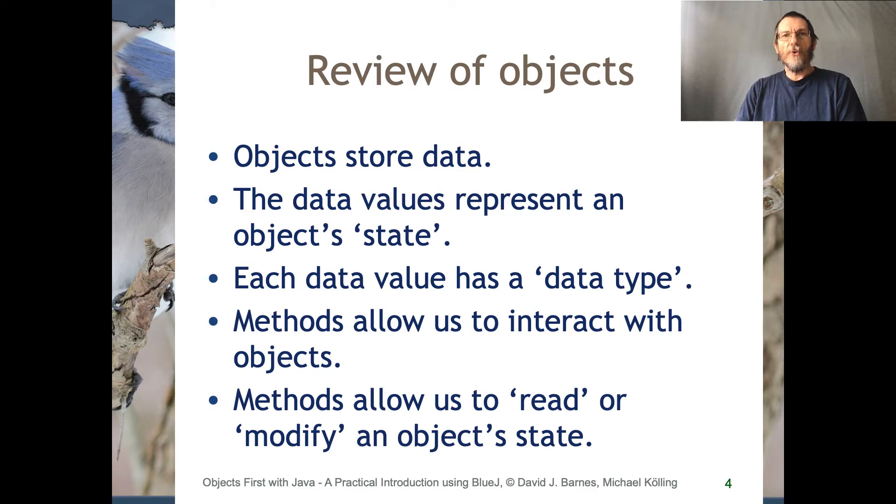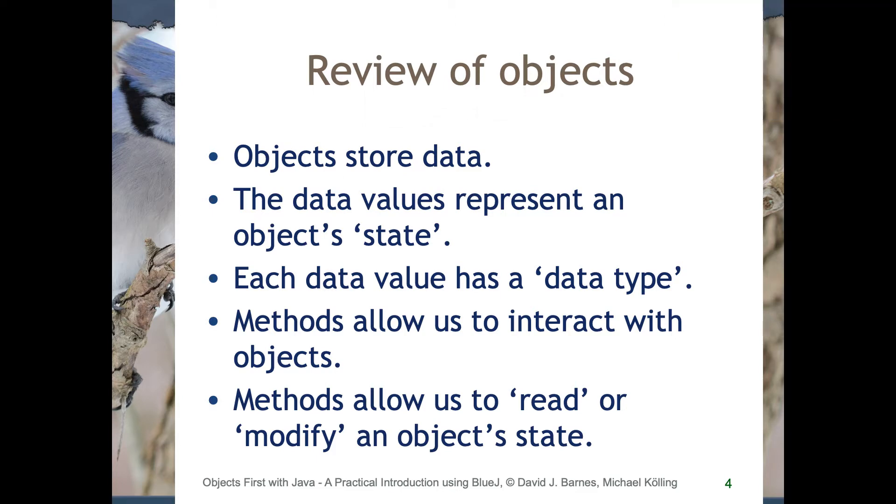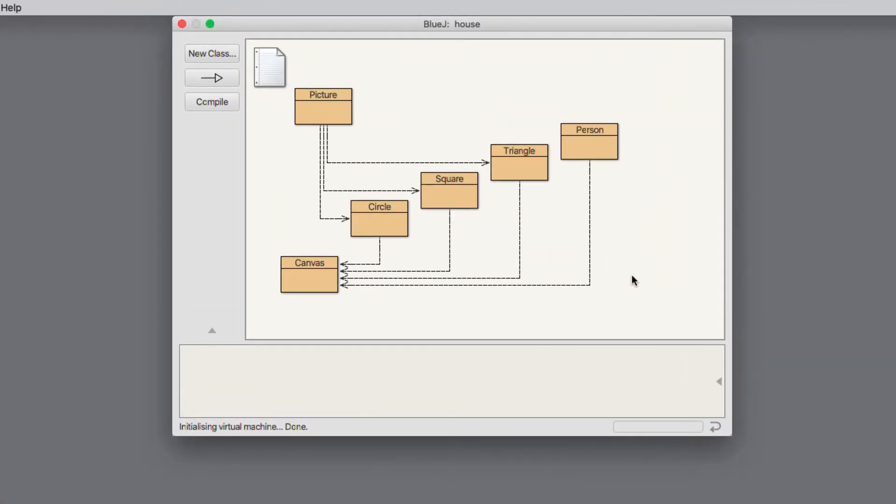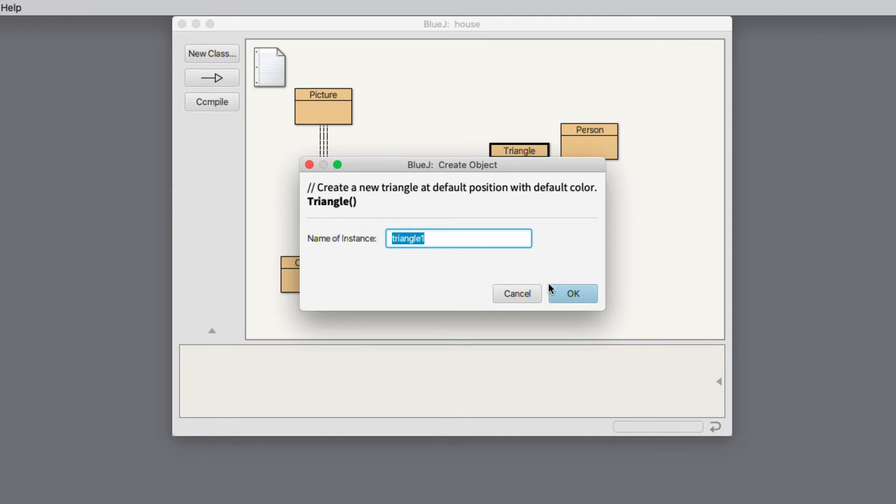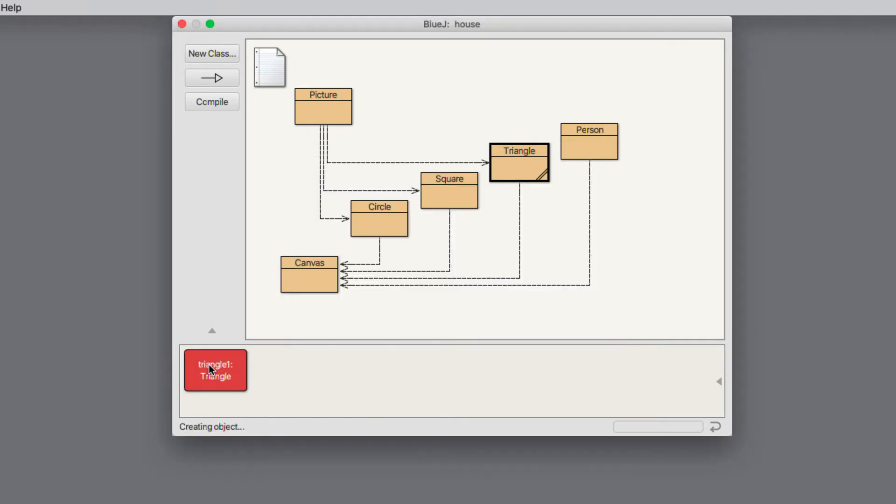Let's take a quick look at some source code to give you an insight into what this means in practice. Here's the house project with the familiar set of classes that we've seen a few times already. I'm going to create a triangle, use its default name and bring up an inspector.